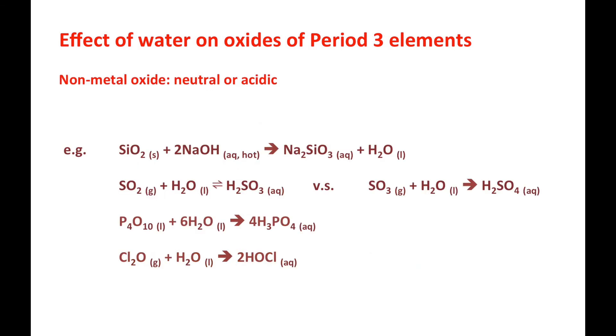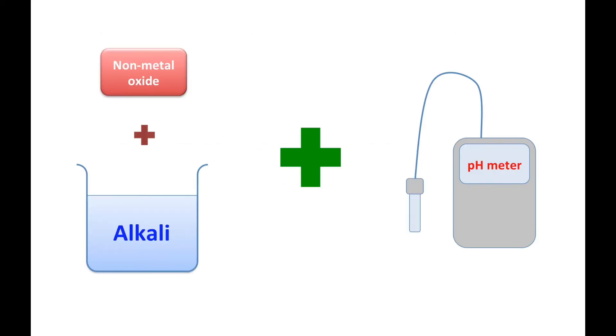For the non-metal oxide, they will show neutral or acidic properties. And everyone should memorize the equation. Here it shows a very special example, the silicon dioxide. They should react with hot sodium hydroxide to have reaction. And once again, they show their acidic properties because they can react with alkaline with dropping in pH value. And this is the end of this section.